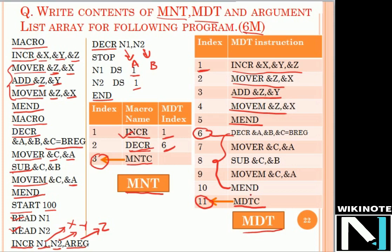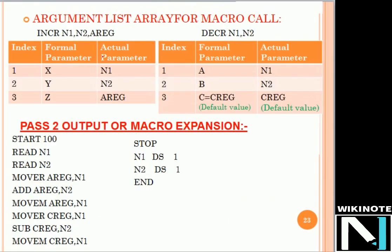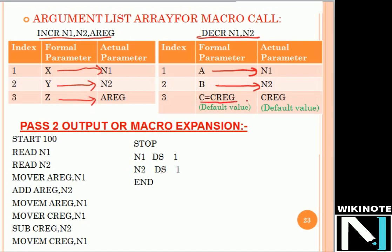One more output of pass one is the argument list array. It is related to the macro calls in the main program. For the first call — INCR N1, N2, AREG — the array contains formal-to-actual parameter mappings: X is replaced by N1, Y is replaced by N2, and Z is replaced by AREG. This is positional parameter expansion. For the second call — DECR N1, N2 — A is replaced by N1 and B is replaced by N2. C has a default value of CREG, so CREG appears as the default in the argument list array.